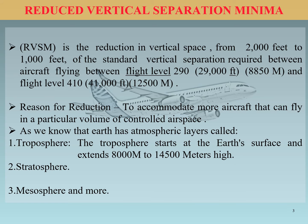RBSM is a Reduced Vertical Separation Minima. Basically it is a reduction in vertical separation from 2000 feet to 1000 feet between aircraft flying in a fixed zone — that is between flight level 290 and flight level 410, meaning 29,000 feet and 41,000 feet. RBSM is applied between this region.